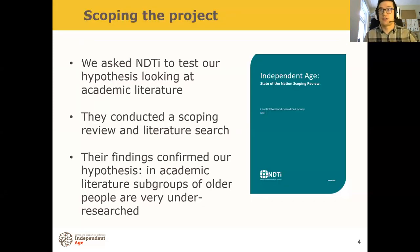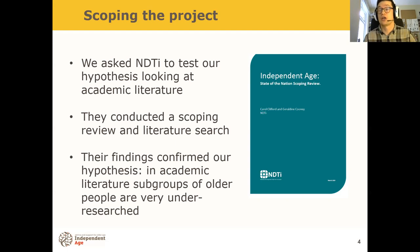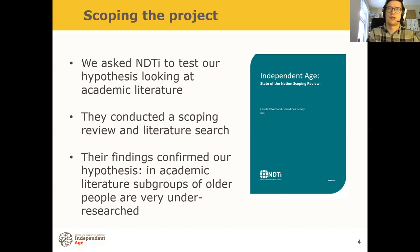For the first stage of the project, we did some scoping — we asked the National Development Team for Inclusion (NDTI) to test our hypothesis by looking at the academic literature. They conducted a scoping review and literature search over a few weeks, and their findings confirmed our hypothesis: in academic literature, subgroups of older people are very under-researched, and the 65-plus age group is used in a homogenised way without looking at differences between smaller age bands.